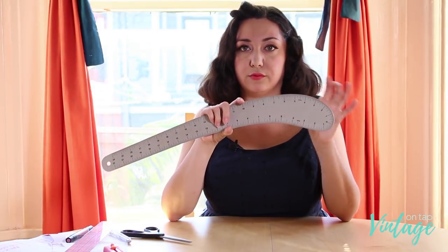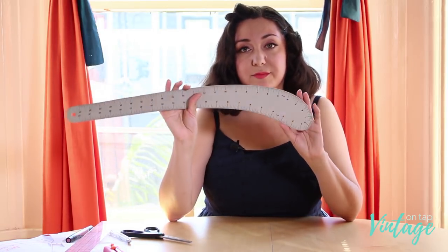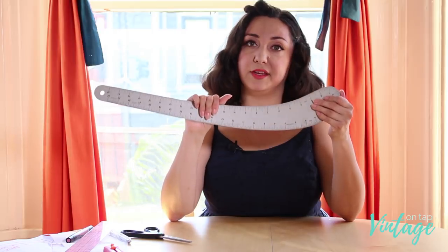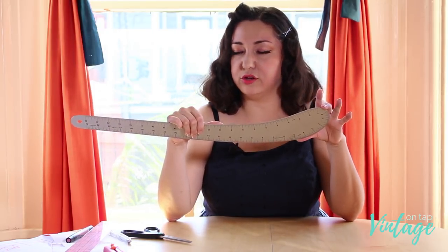Now, different parts of the ruler will correspond to different parts of the armside. Unfortunately, I don't have them drafted up here, but if you're using sloper instructions, they'll usually tell you about how much of a curve you need to be including.